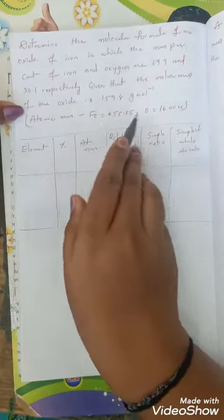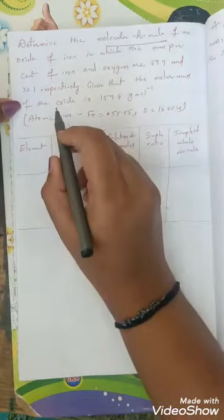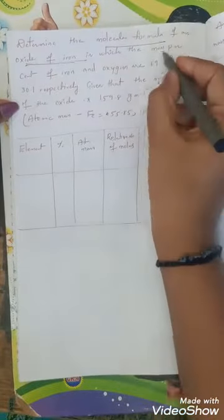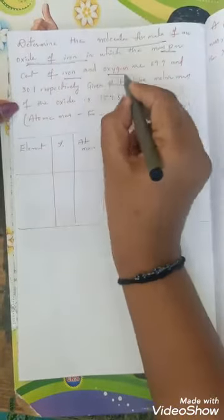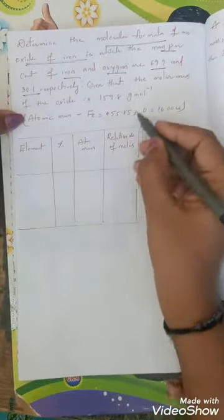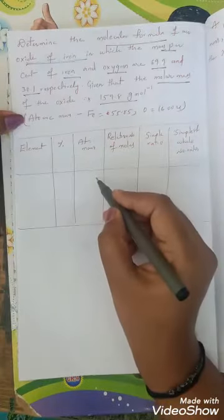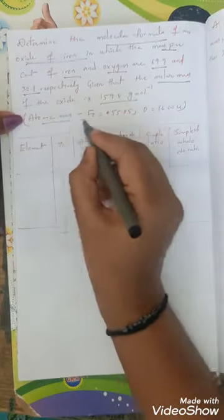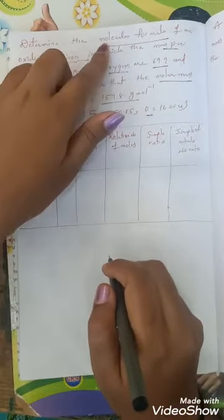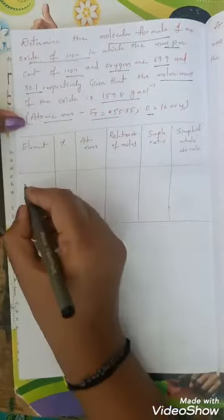Atomic mass of iron and oxygen are given. Here what we want to find out? We want to find out the molecular formula of the oxide of iron. Mass percentage of iron and oxygen are given as 69.9 and 30.1. Along with that the molar mass of the oxide is also given as 159.8. And even the atomic mass of iron and oxygen are given. By using this data we want to find out its molecular formula.